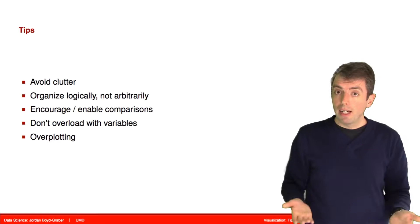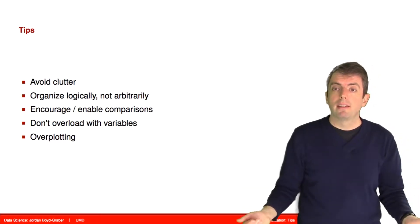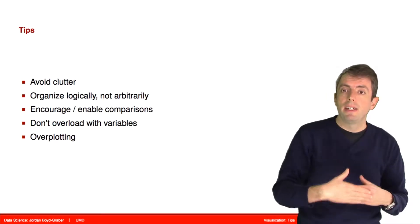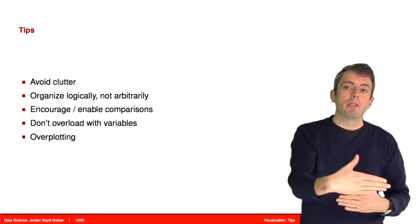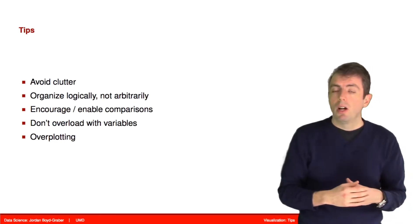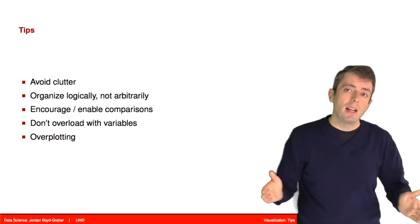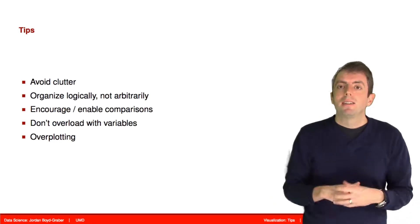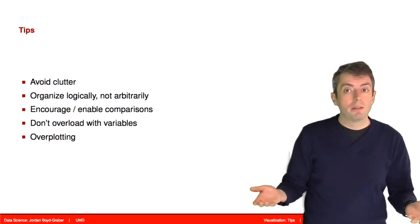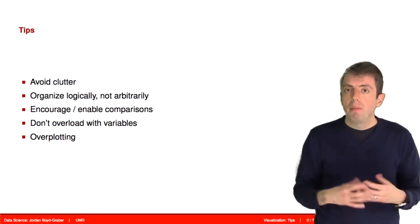You'll have to display a legend, and that legend should make sense. The order should correspond to, say, the average value of that category, or it should be chronological. Don't order alphabetically, which is a reasonable default that your plotting software will do because it doesn't know any better.